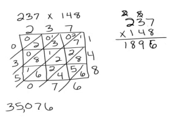And now I'm going to multiply everything times 4, but it's not really 4, it's 40, so I need a placeholder down here. 4 times 7 is 28, carry the 2. 4 times 3 is 12, plus 2 is 14, carry the 1. 4 times 2 is 8, plus 1 is 9. I'm going to cross out my carries again.